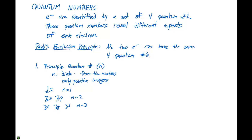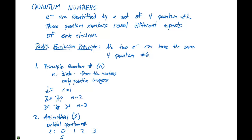The principle quantum number tells us how far away from the nucleus or which subshell we're located in. The second quantum number is the azimuthal quantum number, abbreviated by the lowercase letter l. This is the orbital quantum number, and it indicates the type of orbital in which the electron is moving. The azimuthal quantum number l can equal 0, 1, 2, or 3. For an s orbital l is 0, a p orbital it's 1, a d orbital it's 2, and an f orbital it's 3.